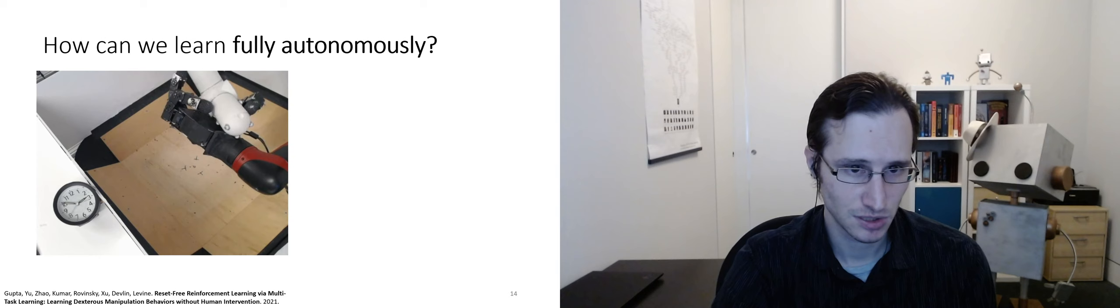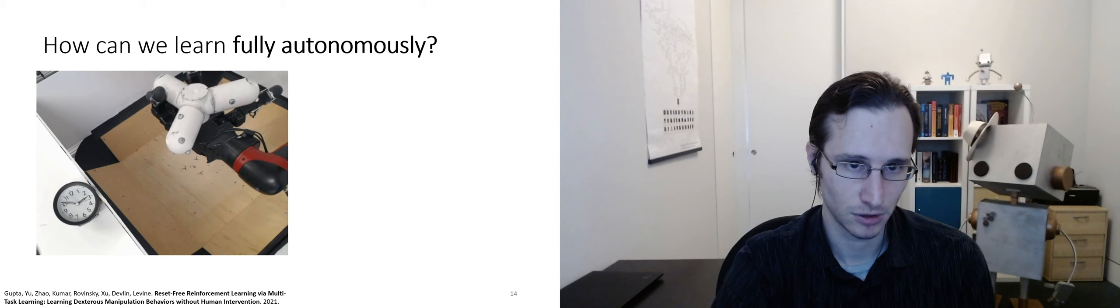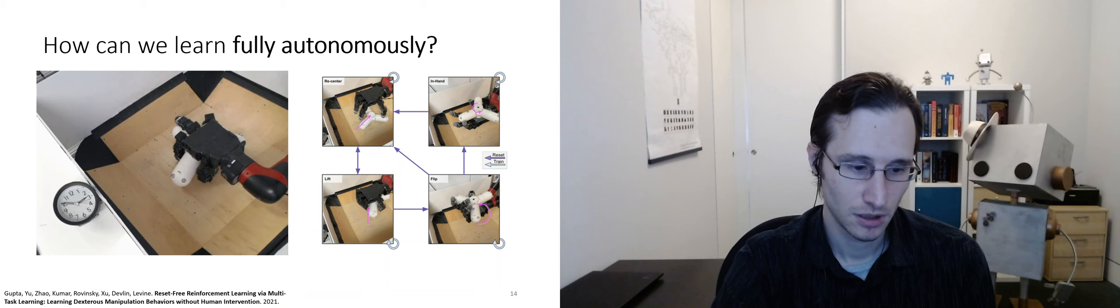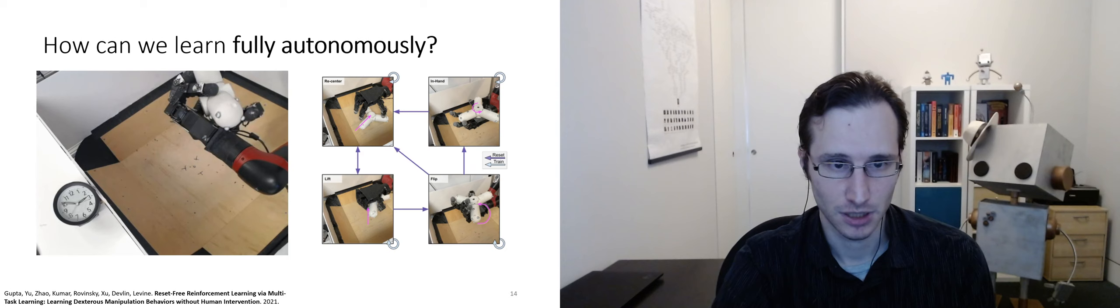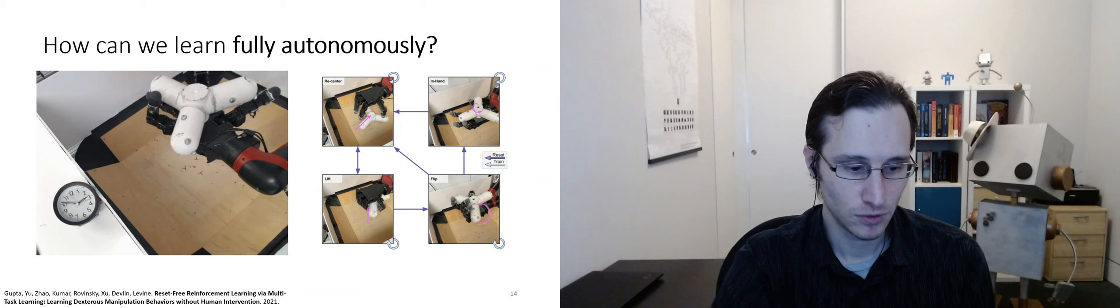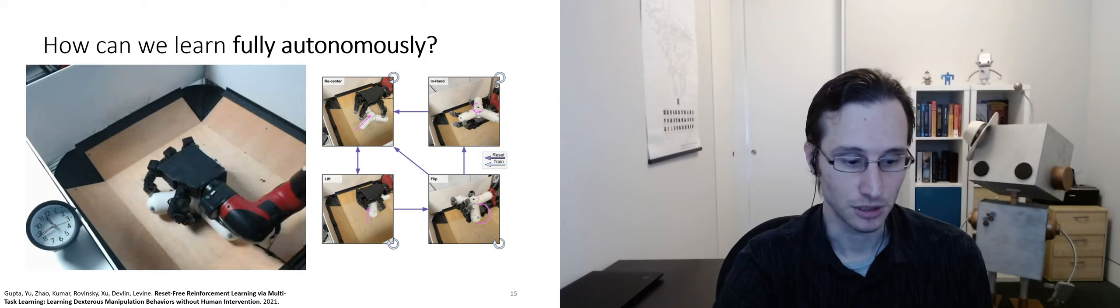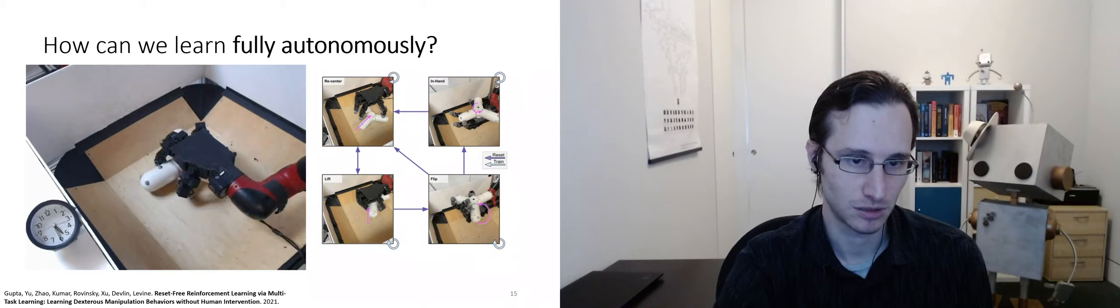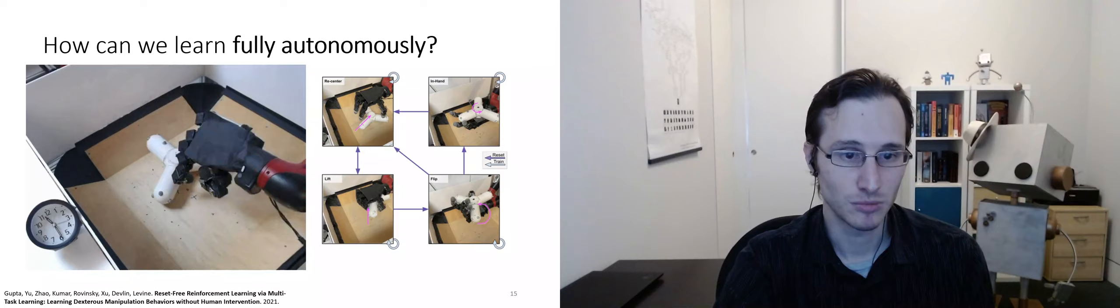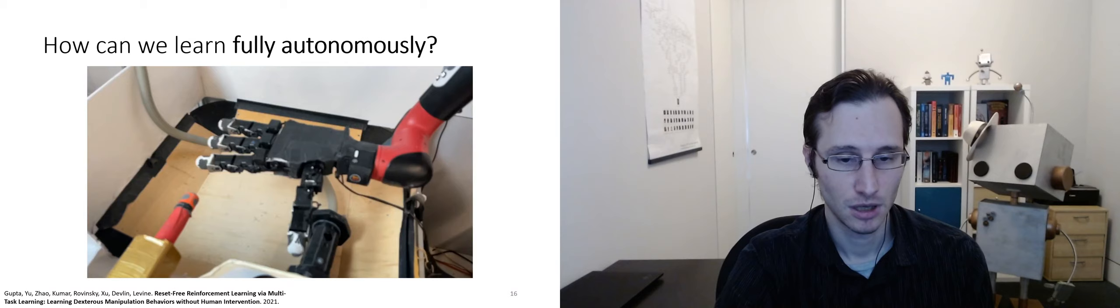Now here's a concrete instantiation of this from a paper by Abhishek Gupta. Here the goal is to learn an in-hand manipulation task, to put this object in the palm and then reposition it so that it is oriented in a very particular way. What we did in this work is we actually defined a graph of tasks. You can move the object around on the table, pick it up, flip it over, and reposition it in the palm. And if you define enough of these tasks, then this graph becomes closed, and then you can learn everything fully autonomously. So you can turn on the robot, go home, and the robot starts practicing. Initially it practices repositioning the object on the table, then it starts practicing to pick it up, then reorienting, and then repositioning in the hand. By making the problem harder, we can actually make it fully autonomous.